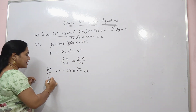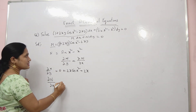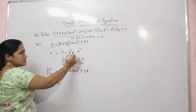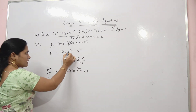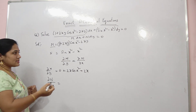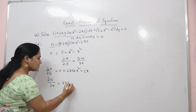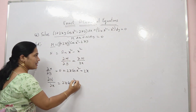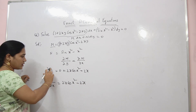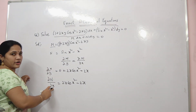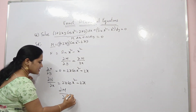Now differentiate N with respect to x. So ∂N/∂x: there are no y terms. Differentiation of sin(x²) — since differentiation of sin(x) is cos(x) and the inner term is x², by chain rule we get 2x cos(x²). Then differentiation of x² is 2x. So ∂N/∂x = 2x cos(x²) − 2x. Observing that ∂M/∂y equals ∂N/∂x, therefore the given equation is an exact differential equation.